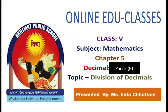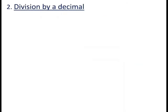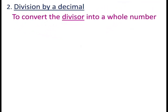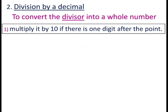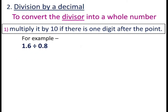Welcome to online classes, children. Today we will learn about division of decimals. The second type is division of a decimal number by another decimal number. To divide a decimal number by another decimal number, you have to convert the divisor into a whole number. If there is one digit after the decimal point, you have to multiply it by 10.